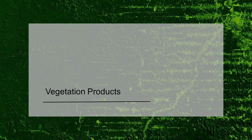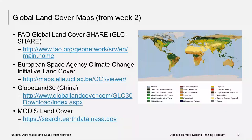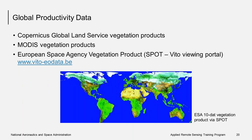In order to address SDG Indicator 15.3.1, countries will need to first assess baseline conditions for land cover and productivity, and then detect change. I will review some existing land cover products and describe some products derived from satellite imagery that relate to productivity. In session two yesterday, I gave information about several global land cover maps, such as FAO's GLC SHARE, the European Space Agency's Climate Change Initiative land cover product, China's GLOBE land product, and the MODIS land cover product. There are several satellite products that relate to vegetation productivity: the Copernicus Global Land Service vegetation products, MODIS vegetation products, and ESA's vegetation product.